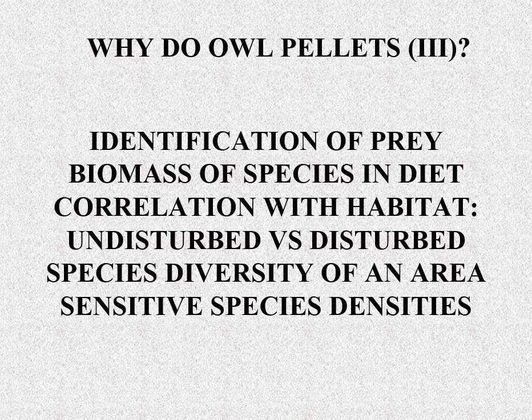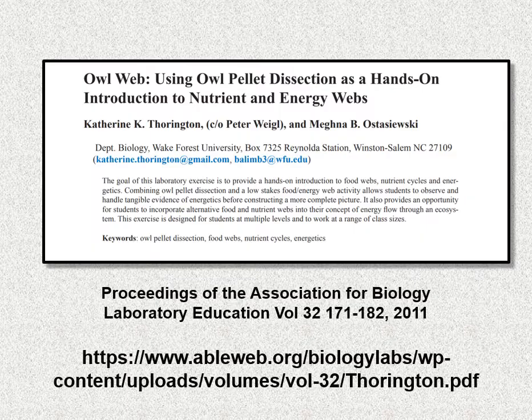The third way of using owl pellets is to do ecological studies. You need to identify prey species here and can correlate it with habitat. The species might be from a disturbed area like a house mouse or an introduced rat, or you can study species diversity of an area. But these studies work best if you know the geographical area the pellets were collected from — you should find a local owl roost and analyze pellets from that known location. There's an excellent free paper on using owl pellet dissection as a hands-on introduction to nutrient and energy webs, from 2011.